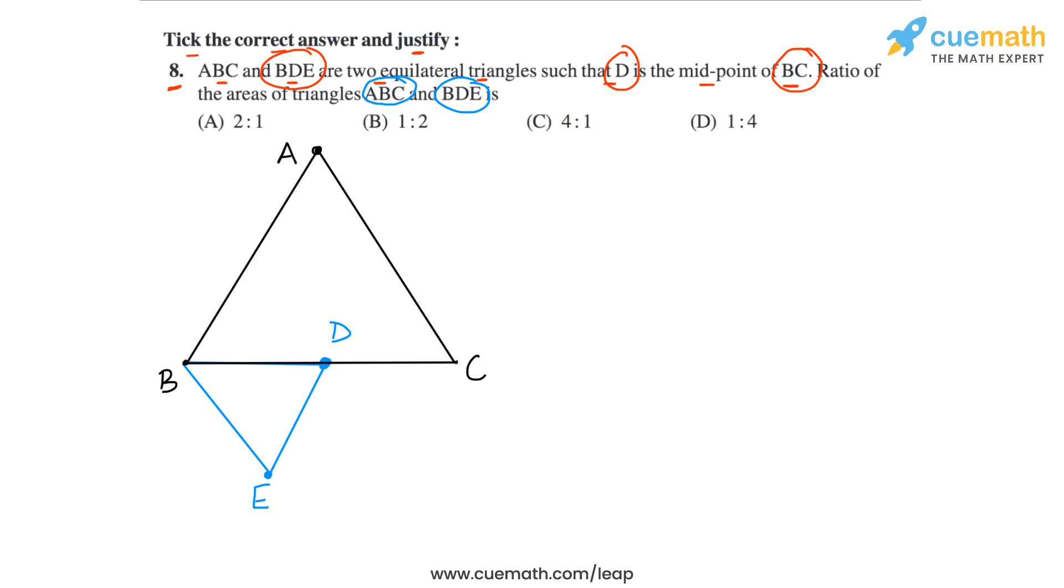If we take let's say the side BC in the first triangle, and if we take the side BD in the second triangle, what is the ratio of these sides? Clearly BD is half of BC. So the ratio of corresponding sides is 2 is to 1. BC is to BD is 2 is to 1. And therefore the ratio of areas will be the square of this ratio.